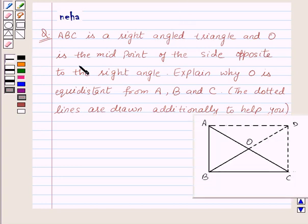The question says ABC is a right-angled triangle and O is the midpoint of the side opposite to the right angle. Explain why O is equidistant from A, B and C. The dotted lines are drawn additionally to help you and here is the figure.